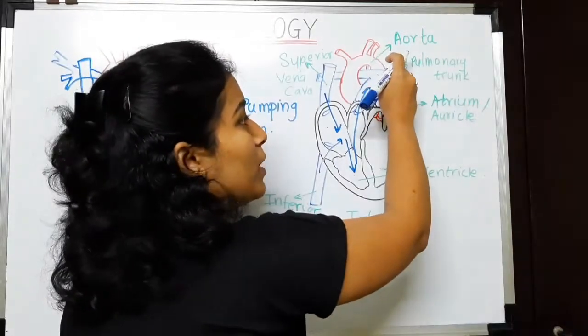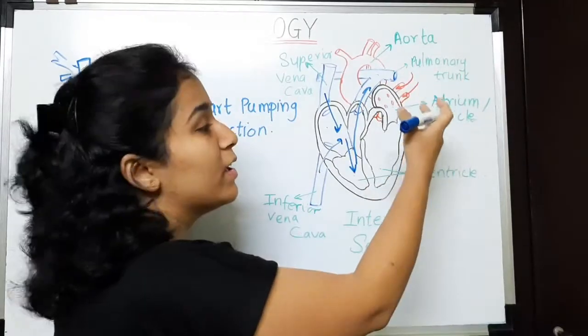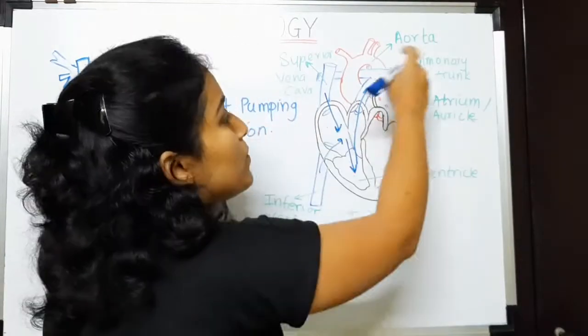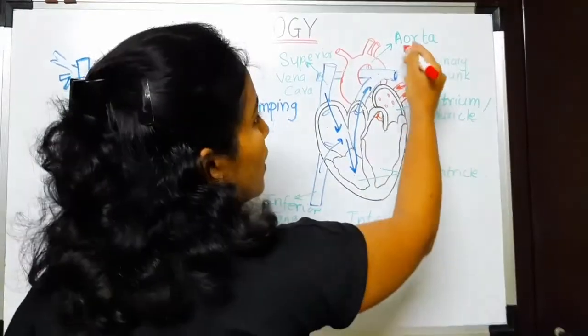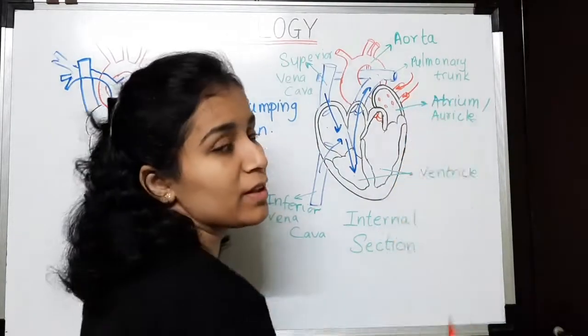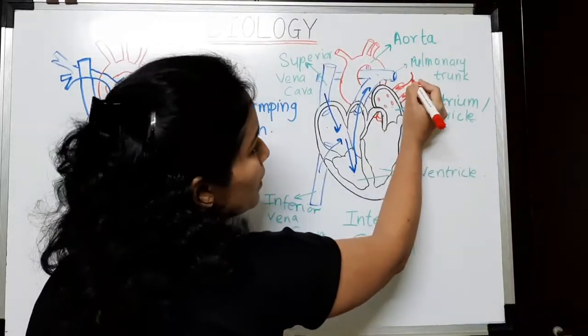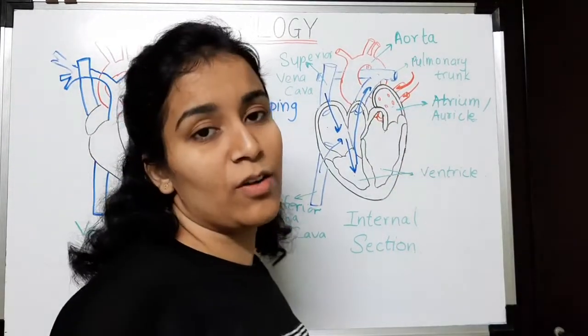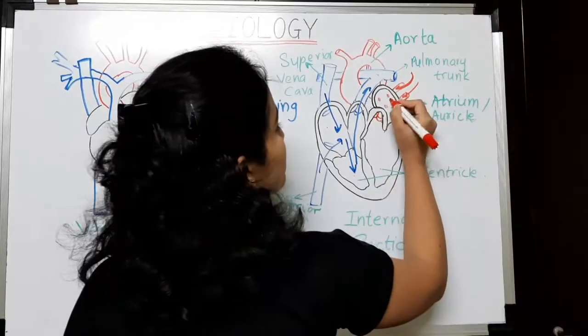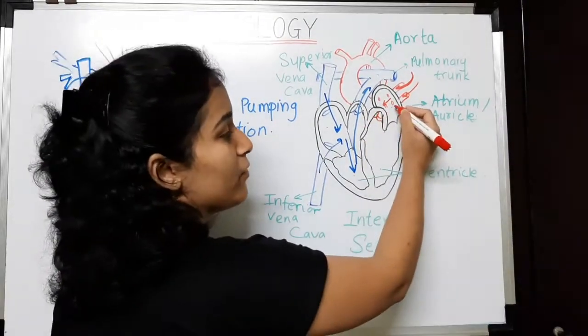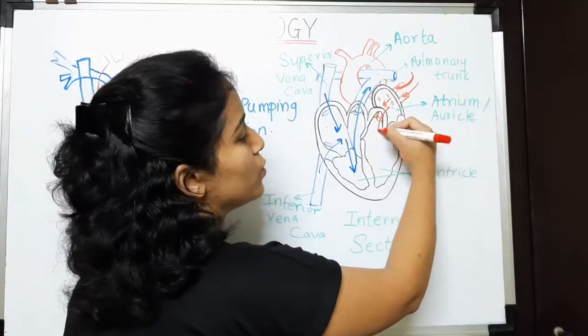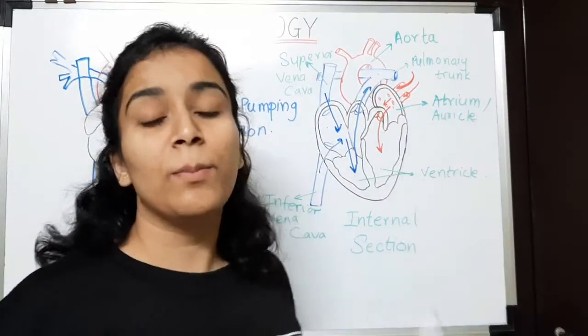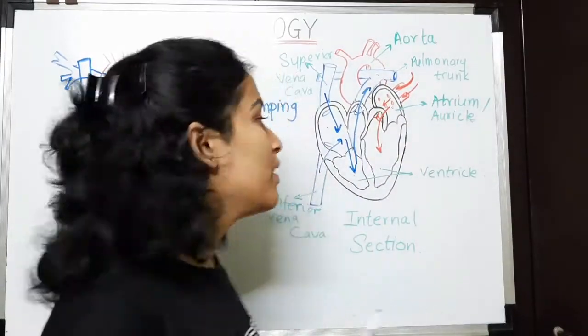From here, from pulmonary trunk, the deoxygenated blood is moved on to lungs where it gets oxygenated and comes back into pulmonary vein. From pulmonary vein, it continues its path to left atrium or left auricle. From this left auricle, it is pumped into left ventricle and this is guarded by bicuspid valve.